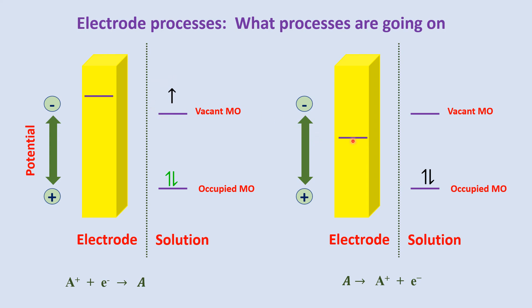Similarly, the energy of electrons can be lowered by imposing a more positive potential. At that point, the electrons in the electrolyte find a more favorable energy level on the electrode and transfer there. In this case, electrons flow from the solution towards the electrode, resulting in an oxidation current. So we have studied two processes: loss of electrons from the electrode and gain of electrons to the electrode, by imposing a negative potential and a positive potential respectively.